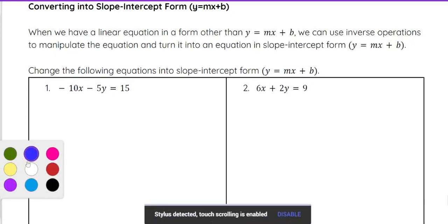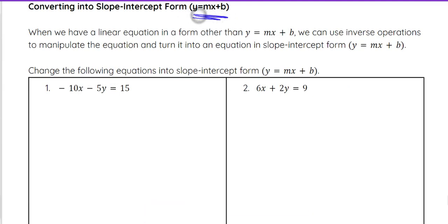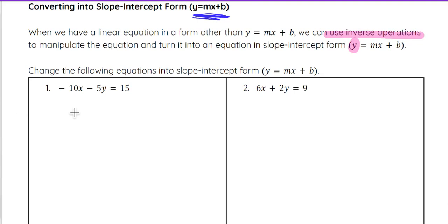Let's look at how we can convert from a form that is not slope-intercept form — y equals mx plus b — into slope-intercept form. To do that, we're going to use inverse operations and solve to get y by itself. That's the goal: when we have an equation not already in slope-intercept form, we want to start by getting the y term by itself.